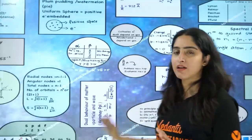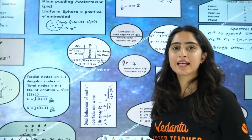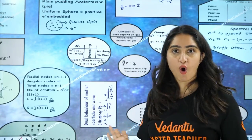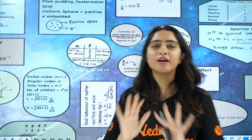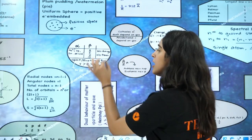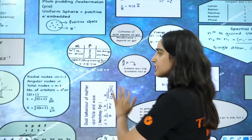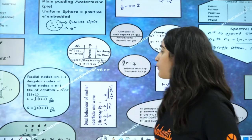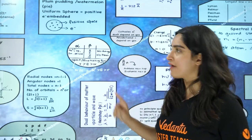Next, we have alpha, beta, and gamma. Alpha is helium 2 positive, beta is an electron, and gamma has no charge and no mass. Talking about size, we have first alpha, then beta, then gamma. Talking about speed and penetration power, we have gamma first, then beta, then alpha.